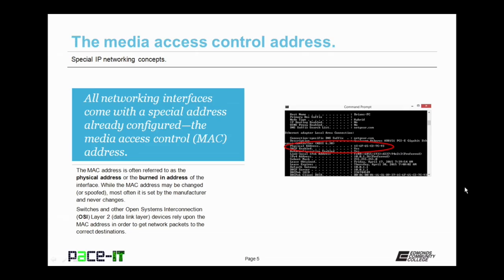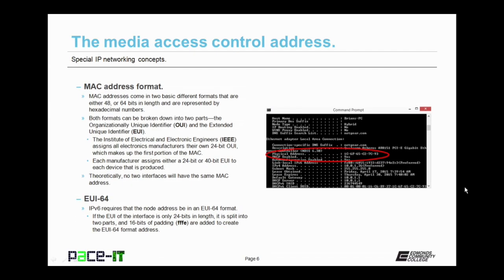Switches and other OSI Layer 2 devices rely upon the MAC address in order to get network packets to their correct destinations. The MAC address has two specific formats: one is 48 bits in length, and the other is 64 bits in length, and both are represented by hexadecimal numbers. Both formats can be broken down into two parts: the Organizationally Unique Identifier, or OUI, and the Extended Unique Identifier, or EUI. The IEEE assigns all electronic manufacturers their own OUI, which always makes up the first portion of the MAC address.